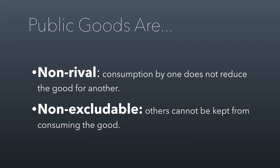Non-excludable means that artificial means can't be used to keep someone from consuming the good. A good example is a public fireworks display. I live in Provo and the big Freedom Festival happens every summer — the fireworks that go up in the air, you can't stop people from seeing them. Perhaps the people running the Freedom Festival would prefer to prevent that so they could charge admission, but they can't. It becomes a public good because there's no way to exclude other people from accessing it. Other examples of public goods include public parks, freeways, and other resources open to the general public.